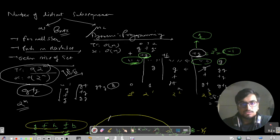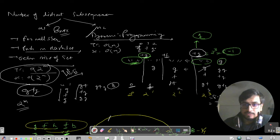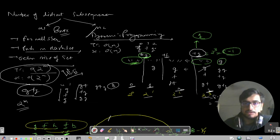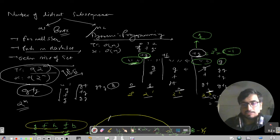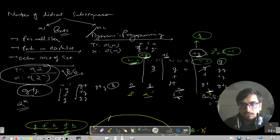For the string GFG, when we have zero characters we have an empty string. As we add one, two, then three characters, the number of subsets formed is 2^1, 2^2, and 2^3. For the first character G, we add G to the empty string. For F, we copy the previous subsequences — empty string and G — and add F to each, giving us F and GF, so four subsequences total. Then the next character is G again.